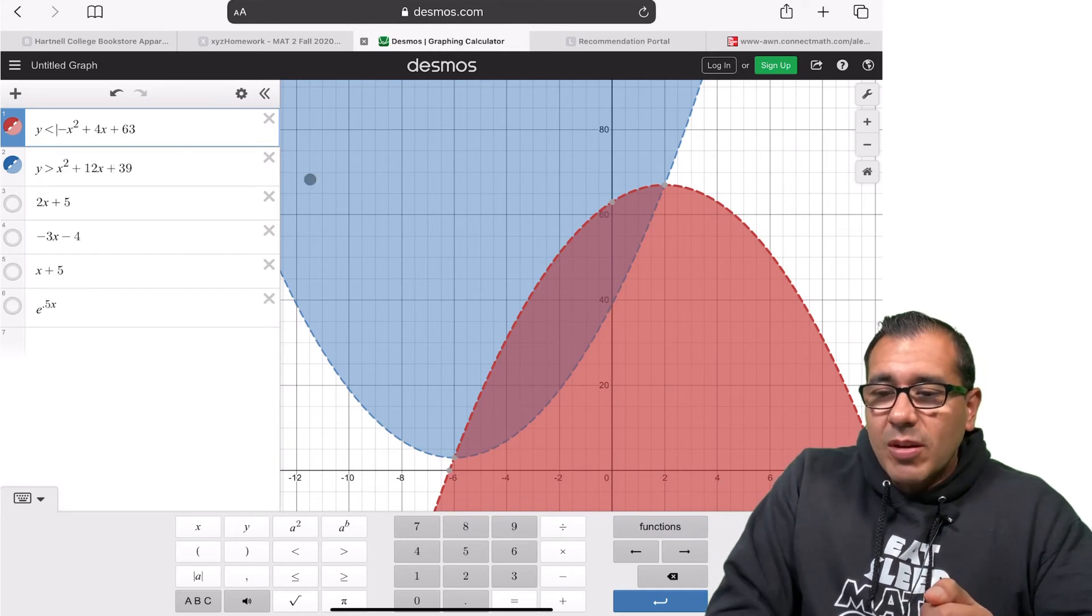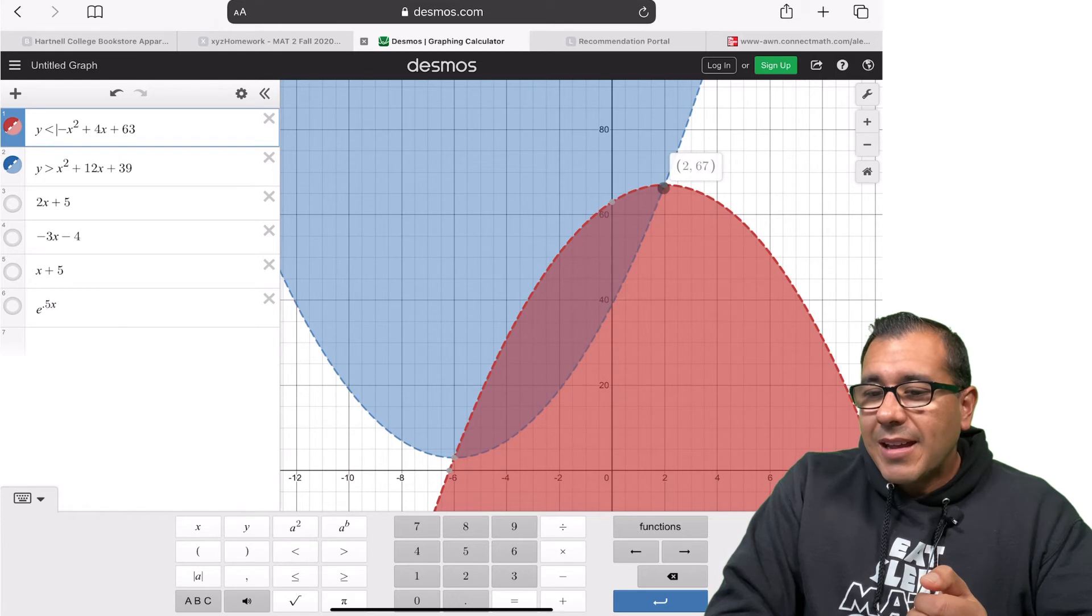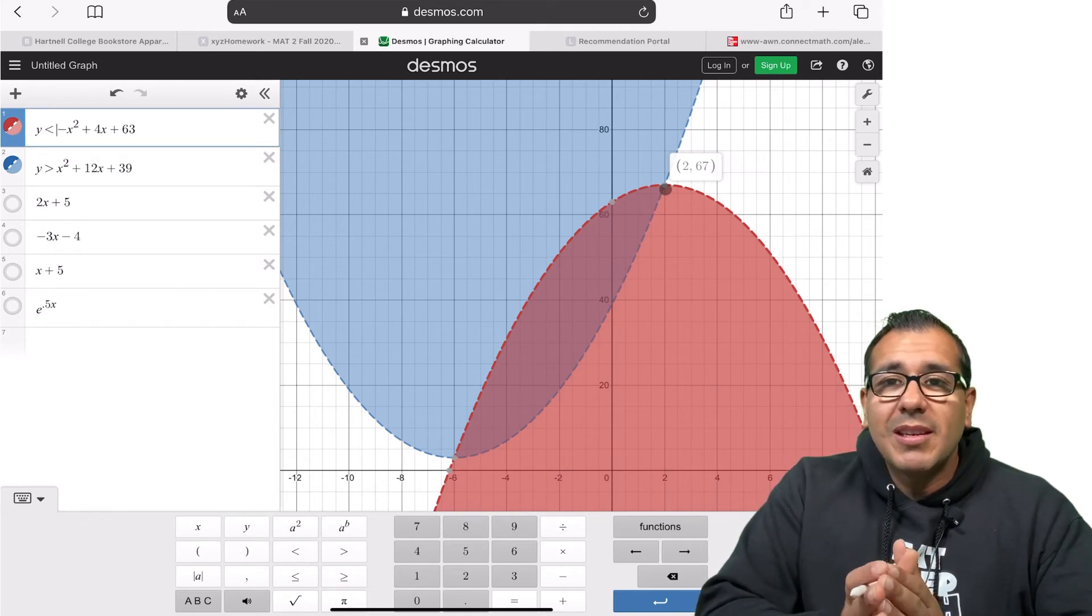But again, I just want to show you how fast this is using Desmos. And then if I hover over here, I could see that the other point of intersection right here, that two comma 67. But again, I would most likely just be interested in these x values.